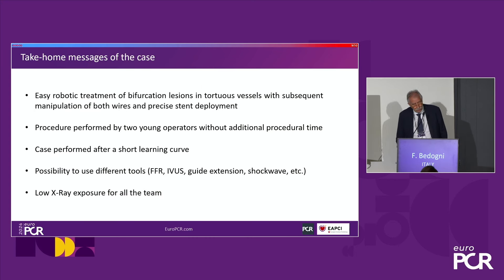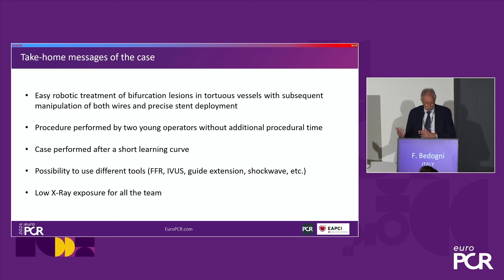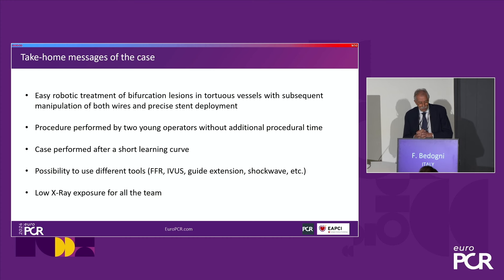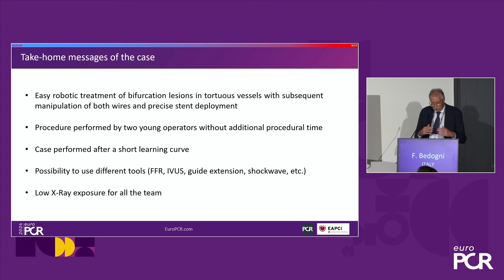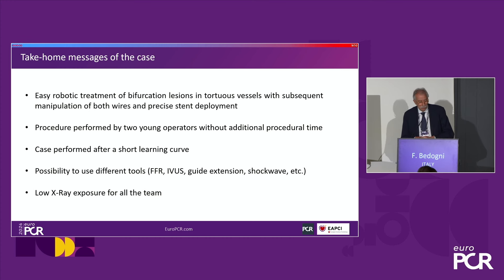The take-home message: this was an easy robotic treatment of bifurcation lesions with subsequent manipulation of both wires — only requiring a change between the standby path and the working path. The procedure was performed by two young operators without additional procedure time. The case was performed after a short learning curve. Various tools such as FFR and IVUS can be used with a 0.014-inch wire. The main benefit is very low X-ray exposure for all team members.